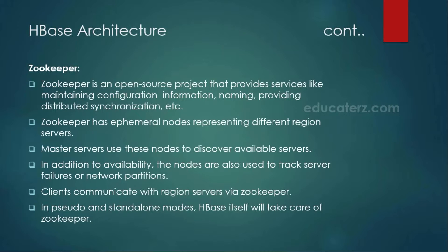Looking at ZooKeeper — in between your client, H Master, and region servers there is a component called ZooKeeper. This is an Apache open-source tool, freely downloadable. The purpose of ZooKeeper is to work as a coordination service — it acts like a coordinator between all your region servers, H Master, and your clients. ZooKeeper has all the information about all the region servers, and your H Master uses this ZooKeeper information to discover which region servers are available. If one of the region servers goes down, ZooKeeper automatically understands that the machine went down, and that information is picked up by your H Master.